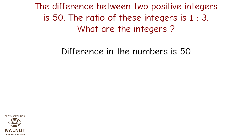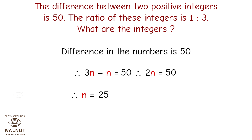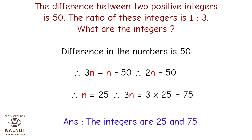The difference in the numbers is 50, therefore 3n minus n equals 50, so 2n equals 50, therefore n equals 25, and therefore 3n equals 75. The integers are 25 and 75.